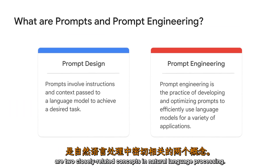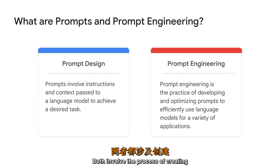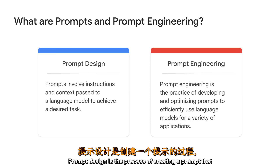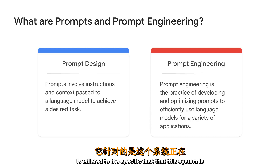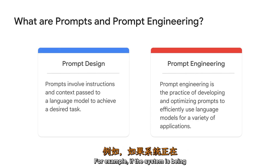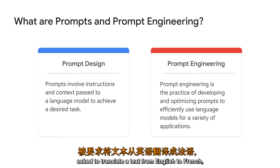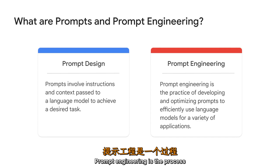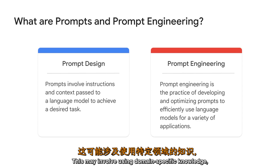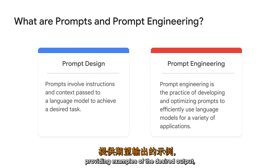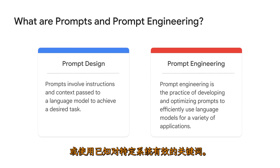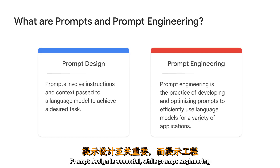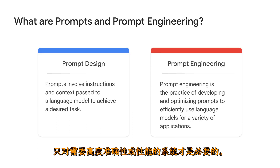Prompt design and prompt engineering are two closely related concepts in natural language processing. Both involve creating a prompt that is clear, concise, and informative, but there are key differences. Prompt design is the process of creating a prompt tailored to the specific task — for example, if the system is asked to translate text from English to French, the prompt should specify that. Prompt engineering is the process of creating a prompt designed to improve performance, which may involve using domain-specific knowledge, providing examples of desired output, or using effective keywords. Prompt design is a more general concept, while prompt engineering is more specialized and necessary only for systems requiring high accuracy or performance.